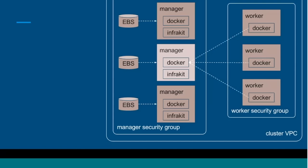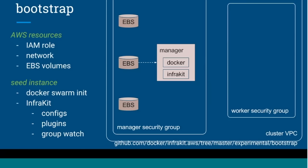We're thinking about this as a bootstrap routine that needs to be performed before InfraKit begins running. The bootstrap operation is required to set up all the resources that InfraKit itself does not already actively manage: the VPC, security groups, subnets, and all networking entities. It also creates the EBS volumes and the initial instance that has InfraKit itself, which has run 'swarm init,' has all the necessary components, the actual JSON config files, sets up the required plugins, and finally invokes 'group watch' on each so we can start active management.